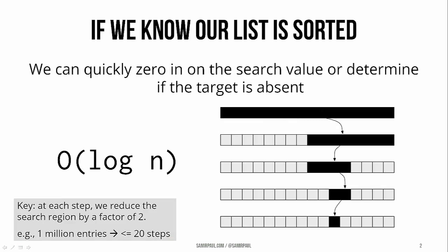If we have the list in ascending, sorted order, then it's really quick to zero in on the target value, or to determine that it's not actually present. If we use a binary search algorithm, we'll show that this algorithm is on the order of log n in terms of its time complexity.